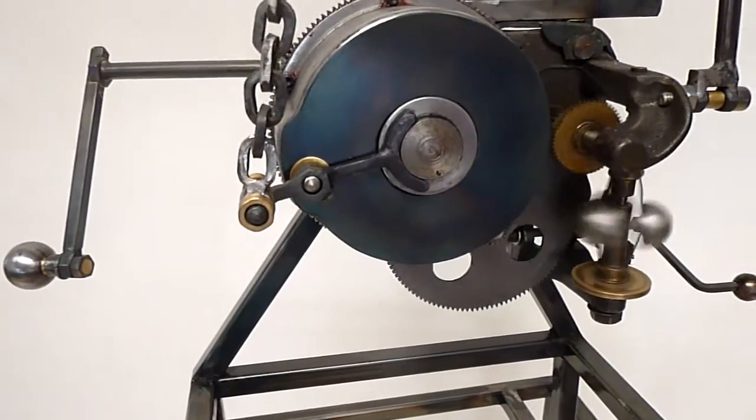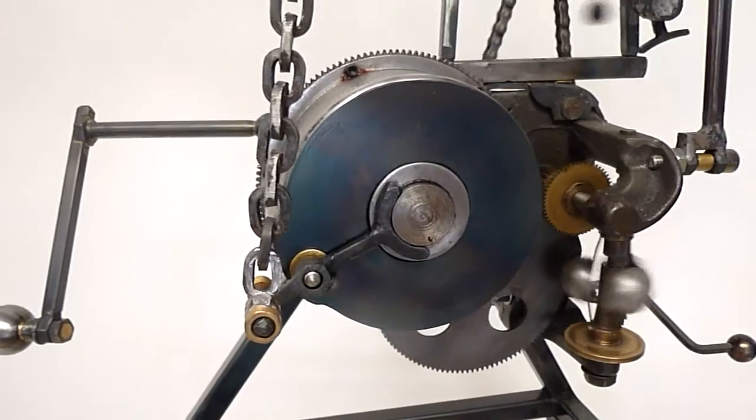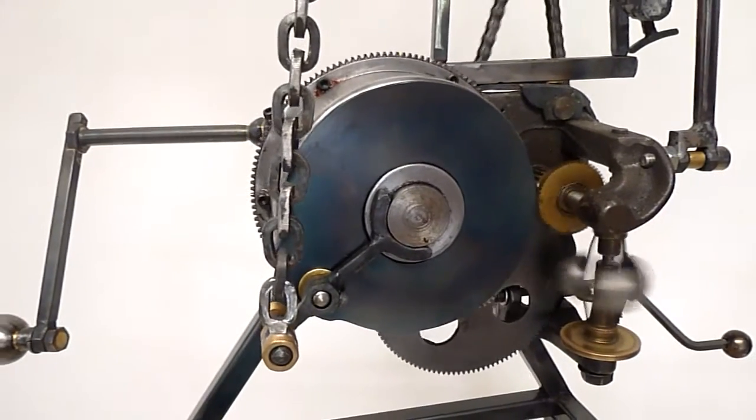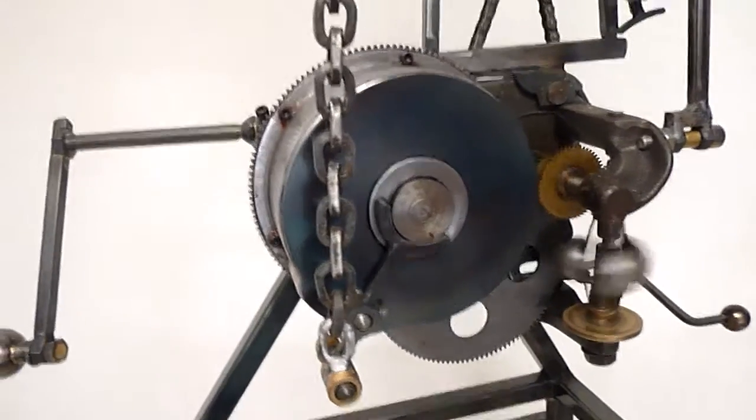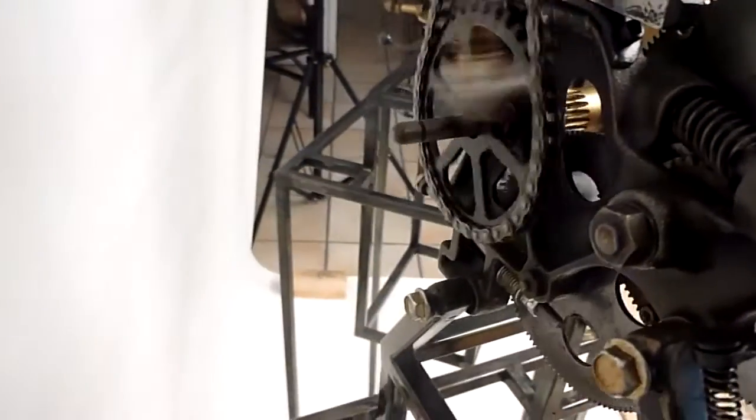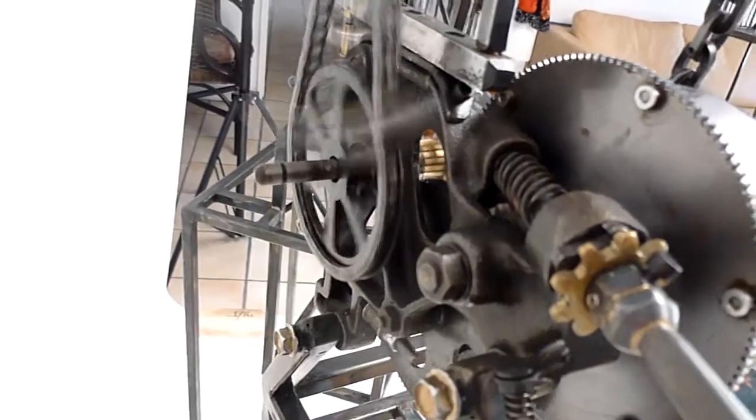This chain right here is being pulled by the spring barrel. This is where the power of the motor is, and the spring is pulling that can around at the rate of about one revolution per minute. On the other side of the motor, we have the spindle, which would have driven the original phonograph. This is turning at 78 revolutions per minute.